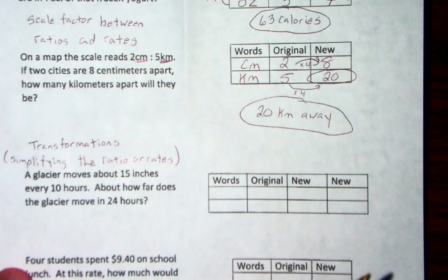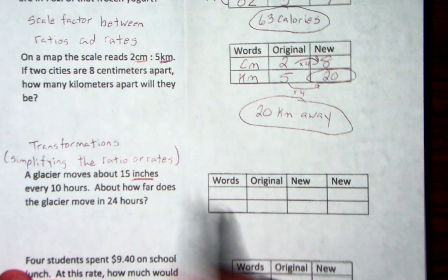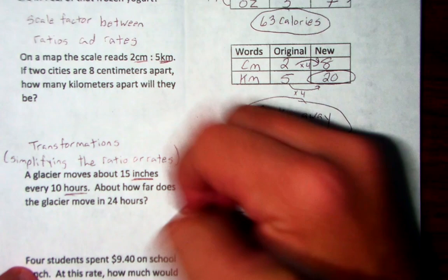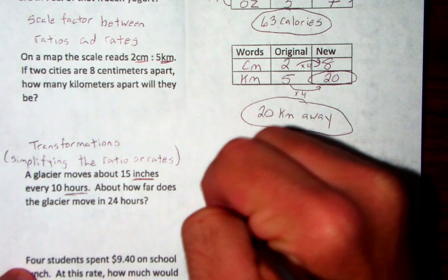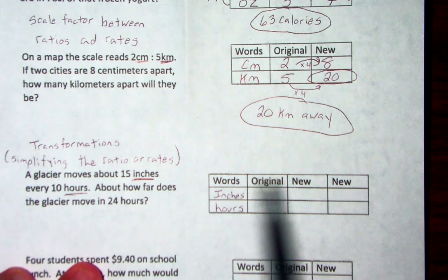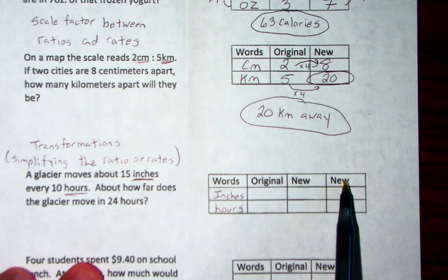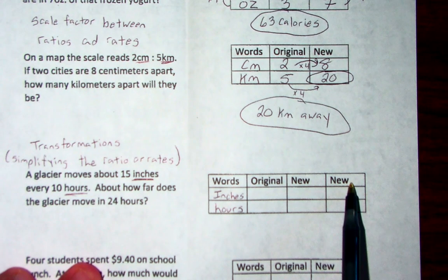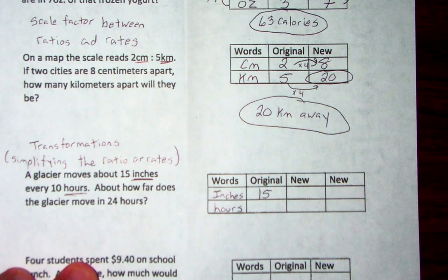Alright, here we go. A glacier moves about 15 inches every 10 hours. About how far does the glacier move in 24 hours? So we're talking about movement of inches versus hours. Okay. Now look at this one. This one's different. This is a really big one chart. Words, original, new, and new. I've never shown the students having two news. So it says the glacier moves 15 inches in 10 hours.